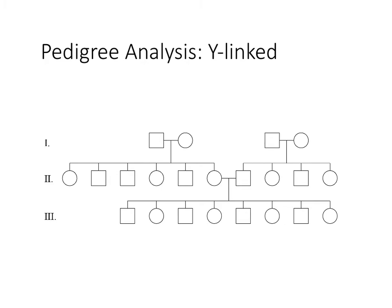Y-linked traits: the last two are really easy. What's the Y-linked inheritance pattern? Men only, because only males have Y-chromosomes. It passes from dads to all sons but never to daughters. So if both men had this trait, all their sons would have it and it would only pass through dad to all sons — no daughters.